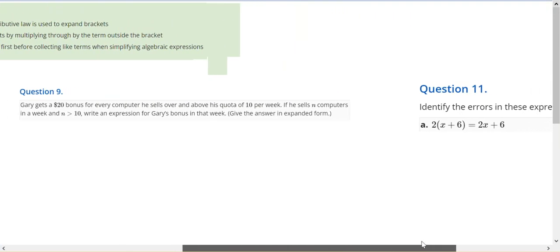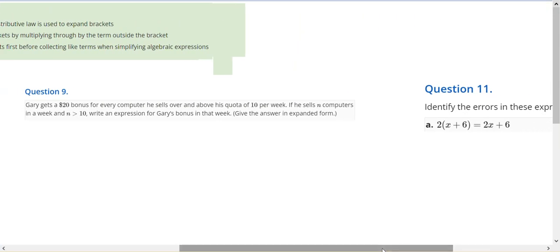So one problem solving and one reasoning question out of 2C. Gary gets $20 bonus for every computer he sells above his quota of 10 per week. So if he sells more than 10, he'll get bonuses.